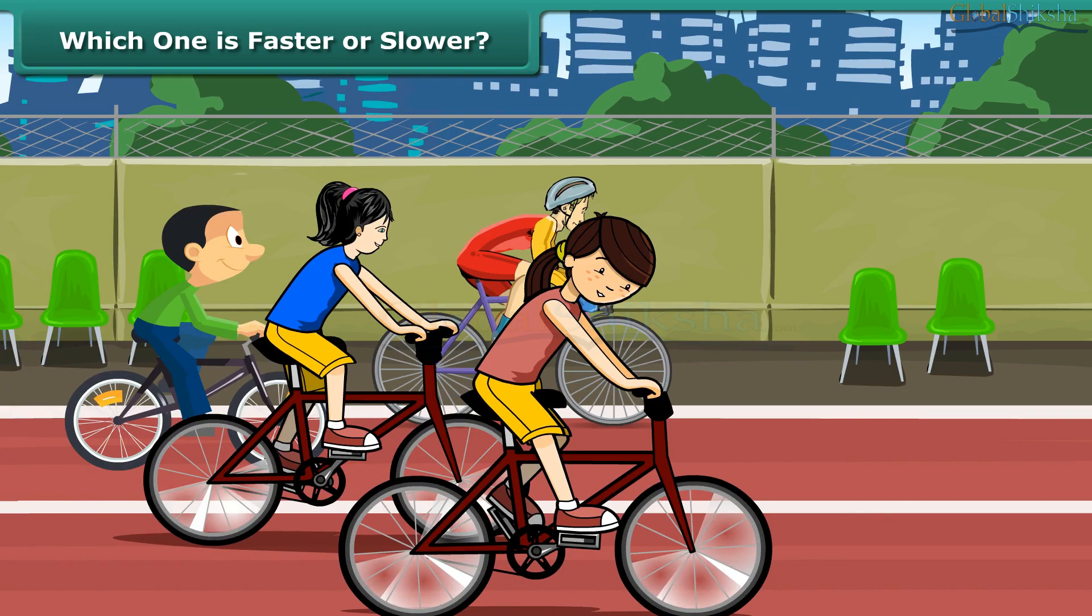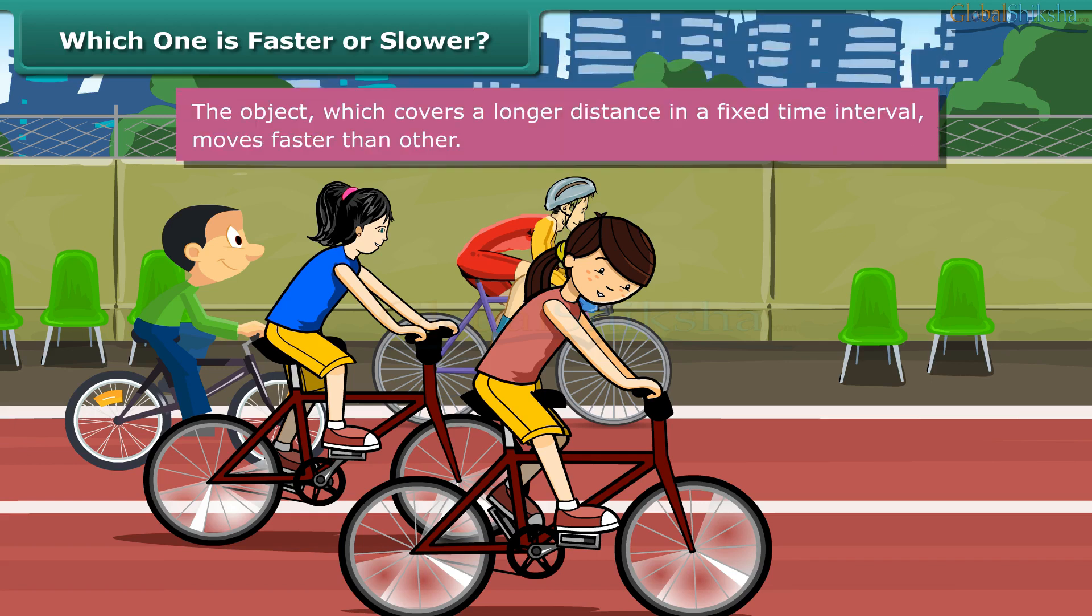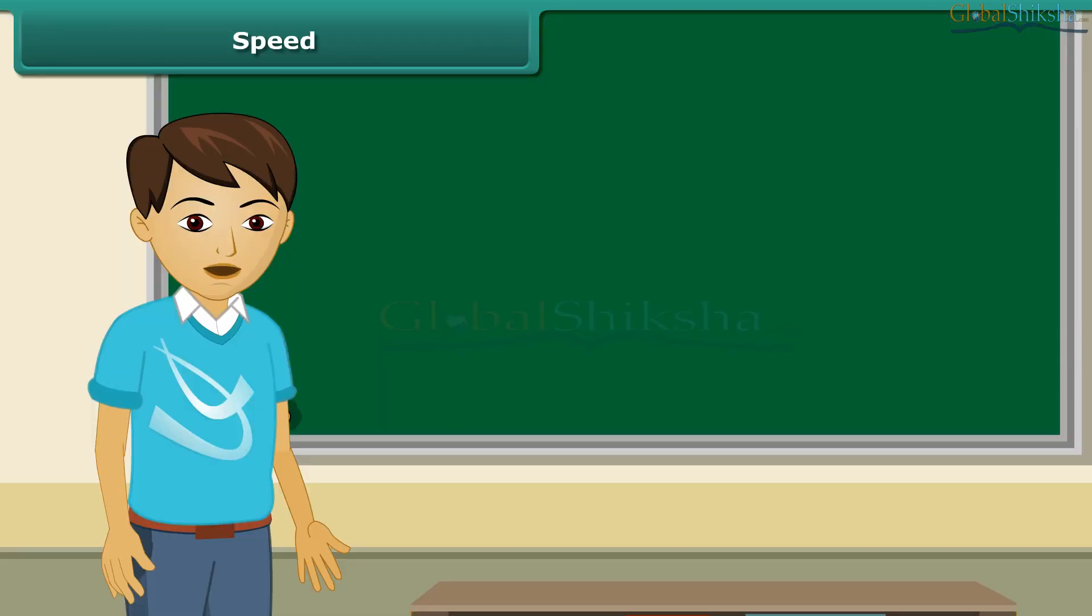This also means that all the others who reached the finishing line later covered less than 1000 m in 10 minutes and hence lost the race. So we can say that the object that covers a longer distance in a given time interval than other is faster. The most convenient way of finding out which object moves faster than the others is to calculate and compare the distances covered by all the objects per unit time.